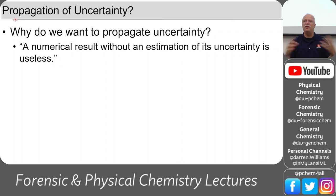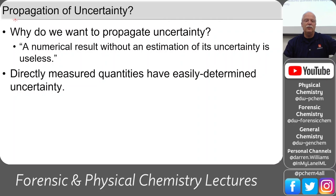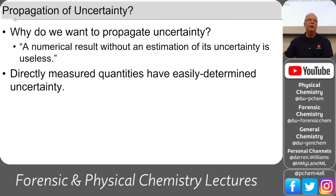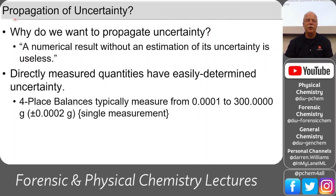The third question is: how sure are you? The first is what is it, the second is how much is there, and the third is how sure are you? You can't do quantitative analysis — and really shouldn't do qualitative analysis — without giving an estimate of confidence. Directly measured quantities have easy uncertainty: if you read the balance box, it says ±0.0002 grams. That's your uncertainty for one measurement, but when you make a volumetric concentration and dilute it, you have additional uncertainties from those operations.